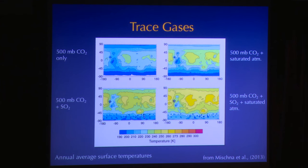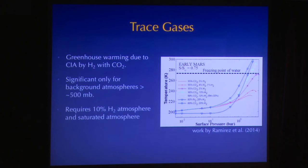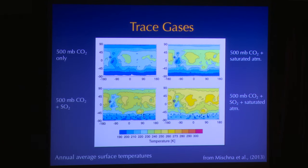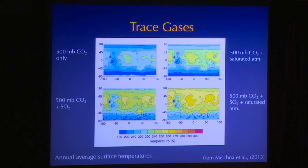An audience question asked whether the annual average surface temperatures include nighttime. Yes — these are total diurnal annual averages, so daytime temperatures would be warmer, perhaps by a significant amount. The point being that to get liquid water, you don't need temperatures above 273 K perpetually — it only needs to occur for even a few hours a day. So these model results showing temperatures approaching the melting point are really overkill for what you'd need to even start melting water on the surface.